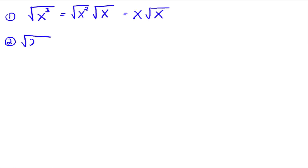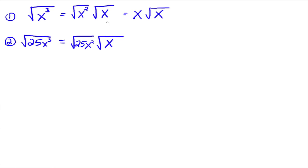How about the square root of 25x cubed? We separate into perfect squares and non-perfect squares. 25 is a perfect square; x cubed splits into x squared and x. So we get the square root of 25x squared times the square root of x, which simplifies to 5x times the square root of x.